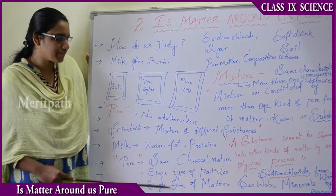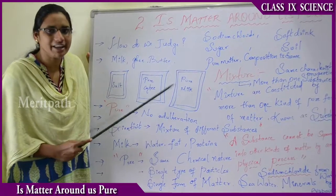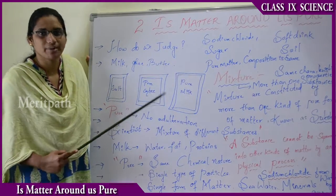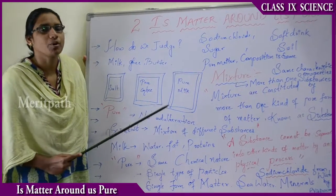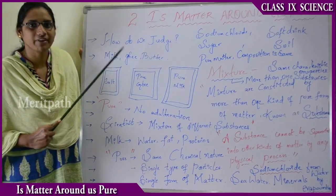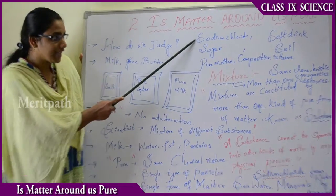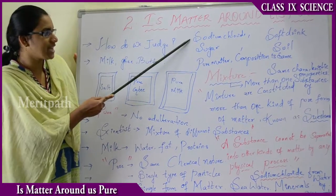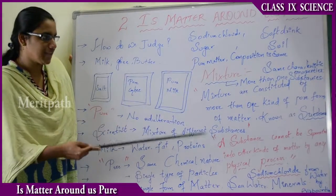For example, if sodium chloride is dissolved in water, we can recover the sodium chloride by the process of evaporation. But sodium chloride itself cannot be divided further, so it is known as a pure substance.